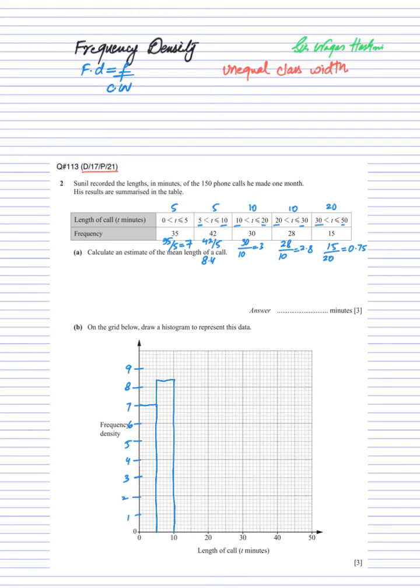For 10 till 20, it equals 3. After that, from 20 till 30, it will be 2.8, and that is your fourth one. After that, from 30 to 50, it is equals to 0.75.